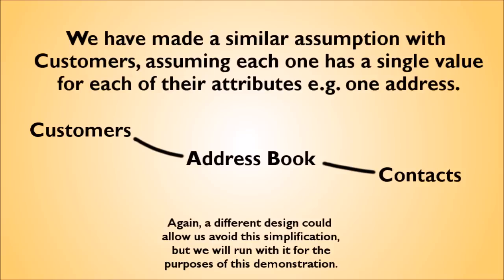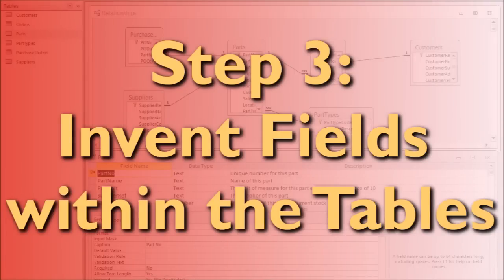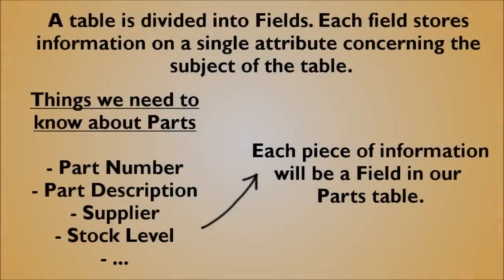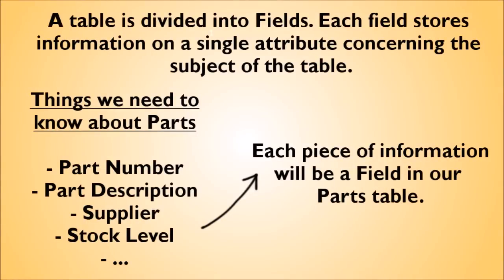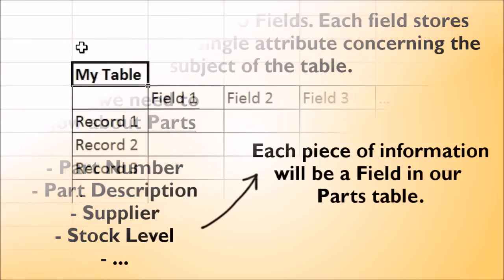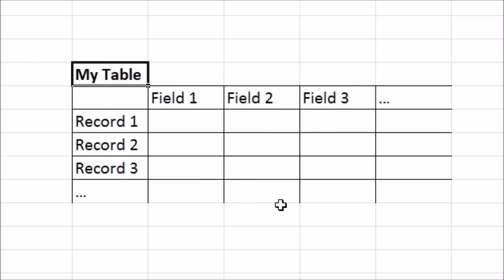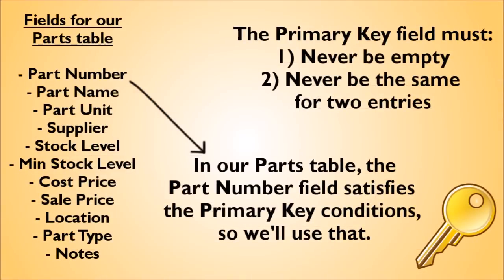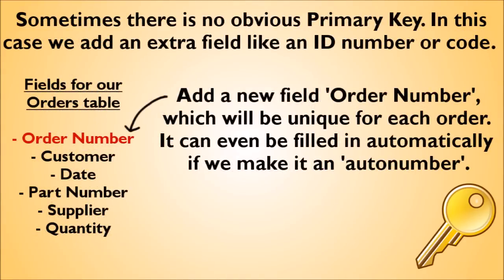Step three: invent fields. Within a table, information is held in fields — basically a field is the specific piece of information about the thing the table is responsible for. Typical fields in the parts table might be part number, parts description, supplier, and stock level. If you picture a table as a tabular grid, the fields would be the column headings, with each row representing a record. All tables should have a unique identifying field called the primary key, which cannot be the same for any two records or ever be empty. In our parts table, the part number is unique for each part, so we can use that.